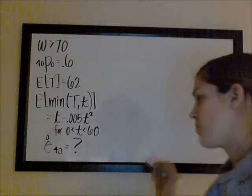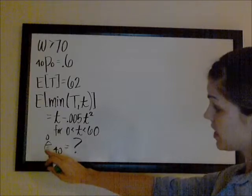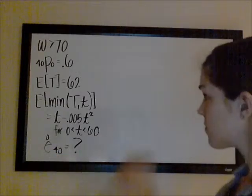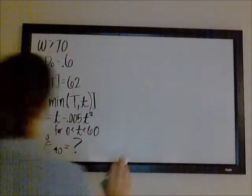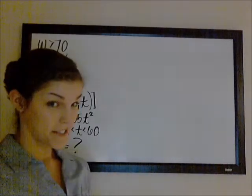We know that t is representing future lifetime, and we're trying to find the complete expectation of life at 40. So, knowing that this was a problem on recursive formulas, I could see at first that...